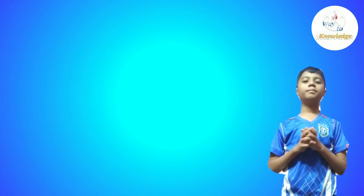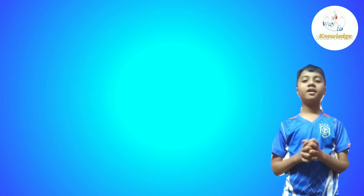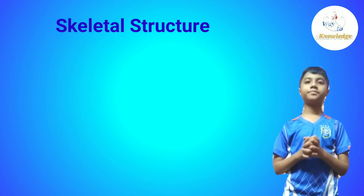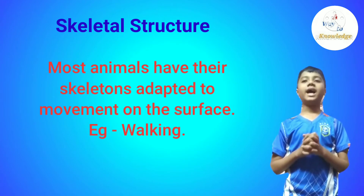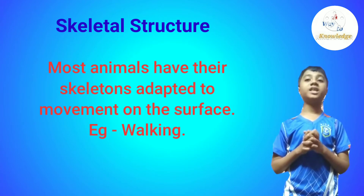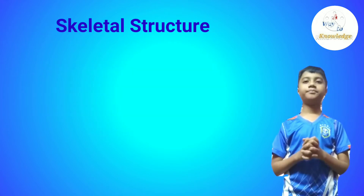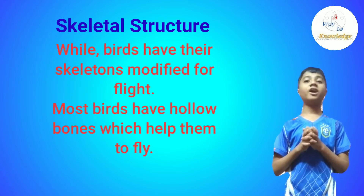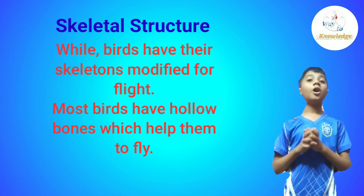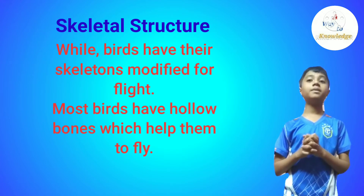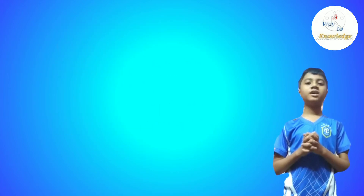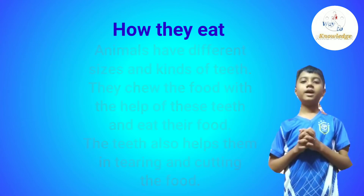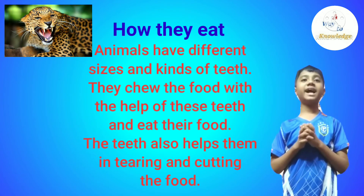Now let's learn some differences between animals and birds. First, their skeletal structure: most animals have their skeletons adapted to movement on the surface, for example walking, while birds have their skeletons modified for flight. Most birds have hollow bones which help them to fly.